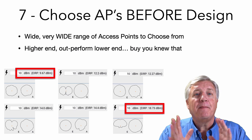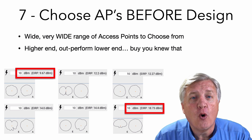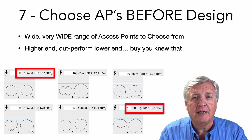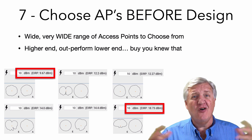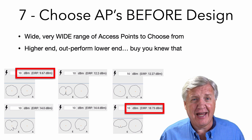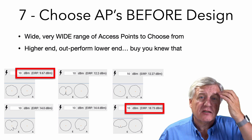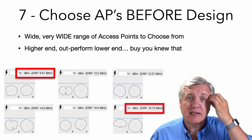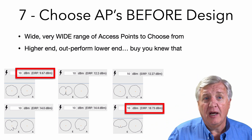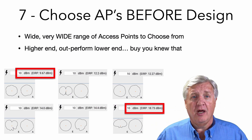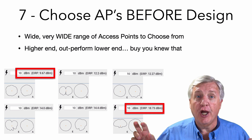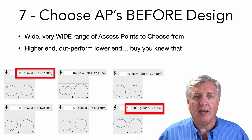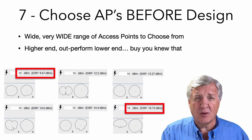Always choose the APs before you start designing. The reason you need to do it before is there's such a huge difference in access points. There is no generic access point you can design for and then install and have it match — it just doesn't work that way. I wish there was never a generic AP allowed, because you can't buy one, so why would you design for it?